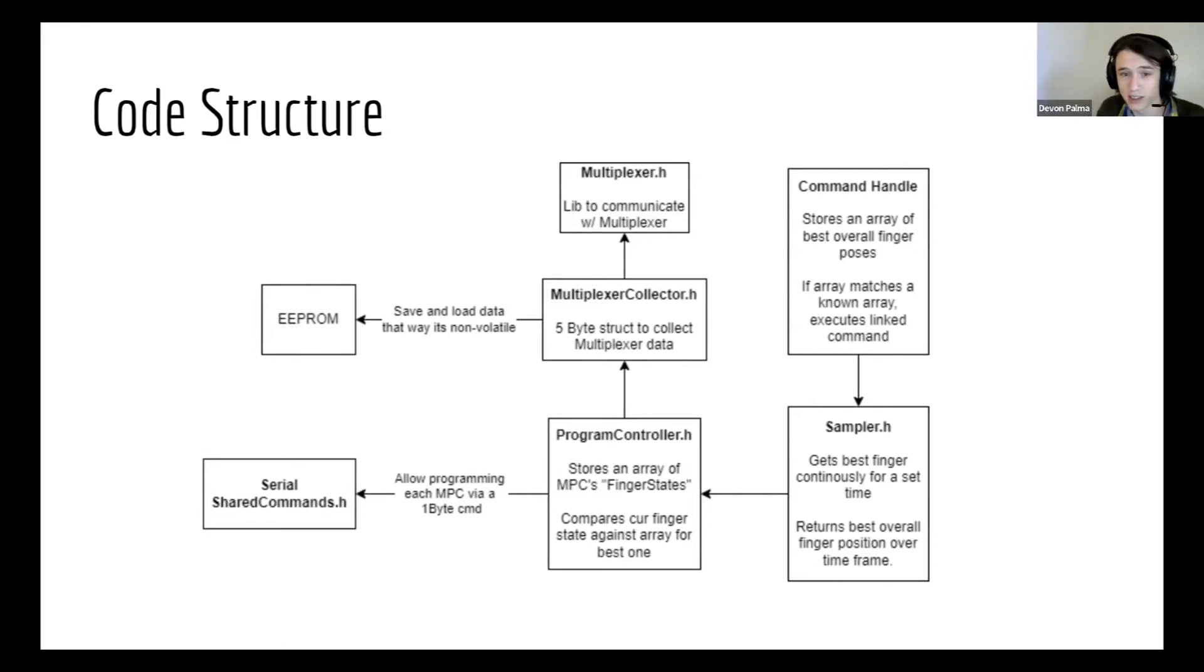Then there is the program controller. This basically stores a few hand positions and compares them against the current hand position to give me the most accurate one. So, if I had, for example, a phone position stored, it would store that. Or if I had a rock on sign stored, it would be able to compare against both of those and give me the best value.